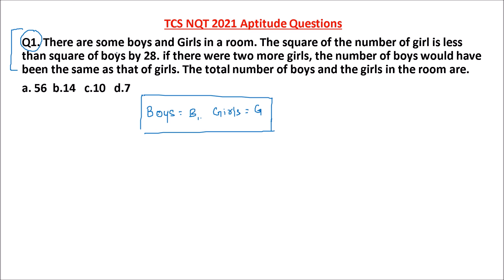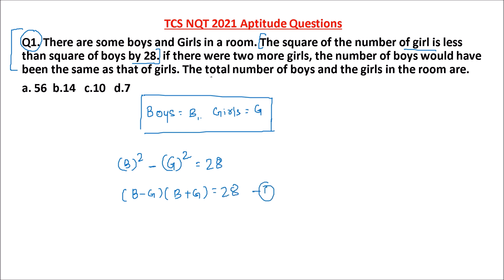There are some boys and girls in a room. The square of the number of girls is less than the square of the number of boys by 28. So here I can see there is one equation: the square of number of girls is less than the square of number of boys by 28. I can also write this as: B minus G, into B plus G, equals 28. And that becomes my equation 1.